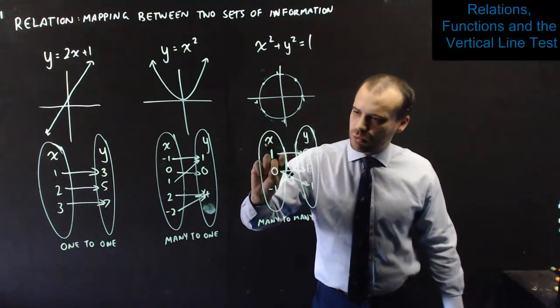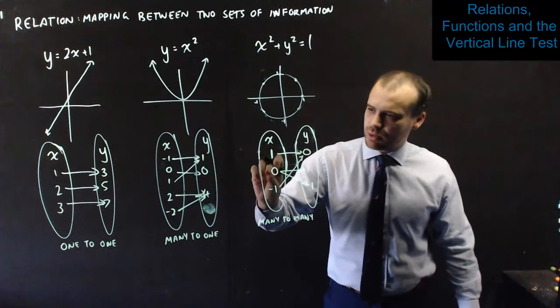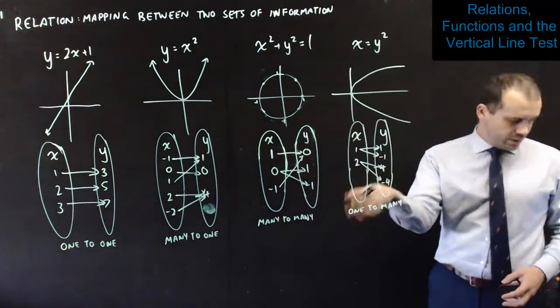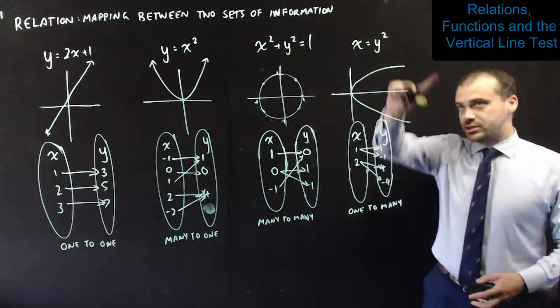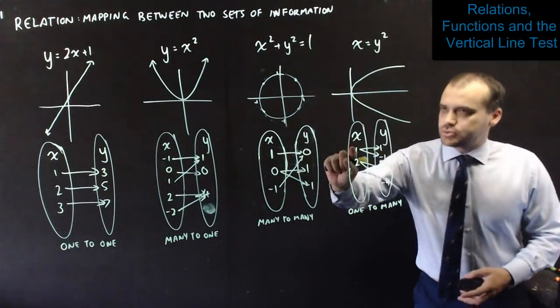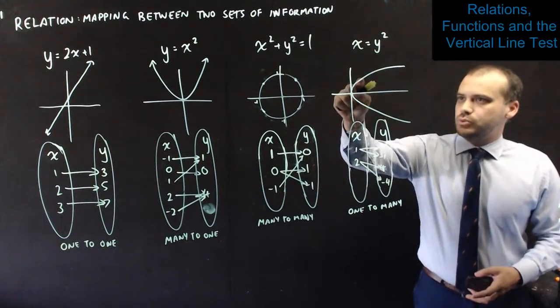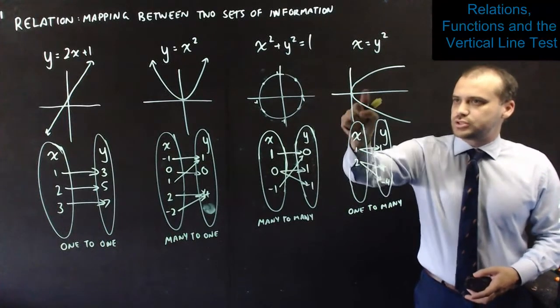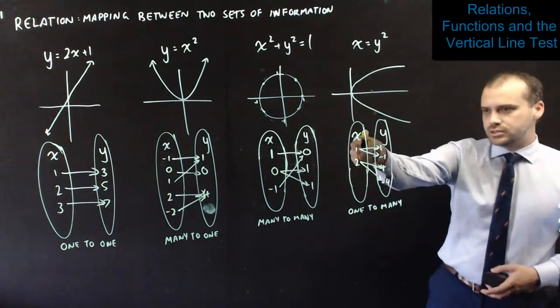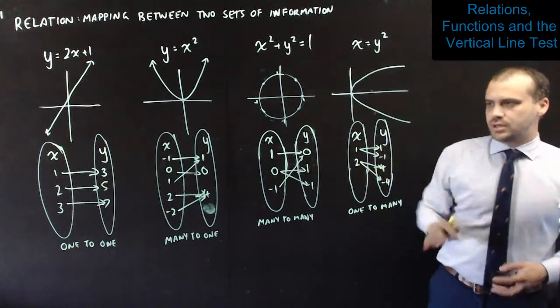But then here, we have a one-to-many. When x is 0, y is 1 and negative 1. So, that's a many-to-many. And finally, we have this one, one-to-many. You can see it's a quadratic on its side. Look at the equation. When x is 1, y is 1 or negative 1. When x is 2, y is 4 or negative 4. So, that's a one-to-many.